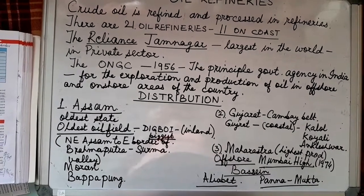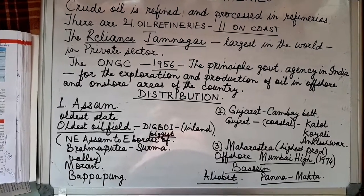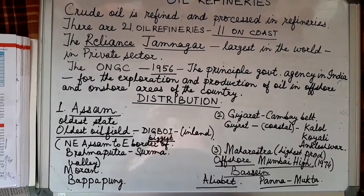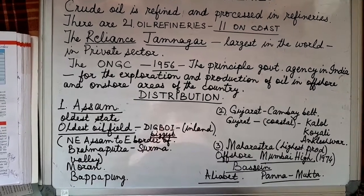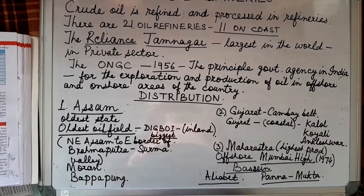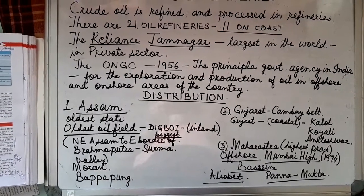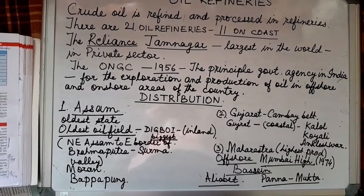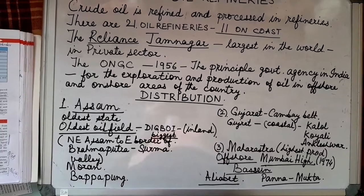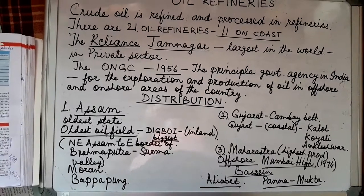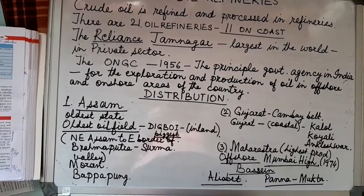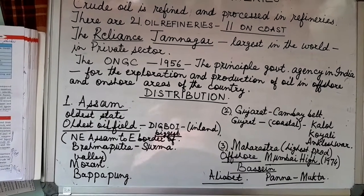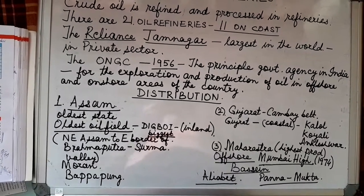The biggest oil refinery in the world is in Gujarat — it is owned by Reliance Industries and is located in the town of Jamnagar. The principal government organization responsible for the exploration and production of oil is ONGC, which stands for Oil and Natural Gas Corporation.